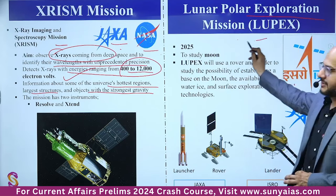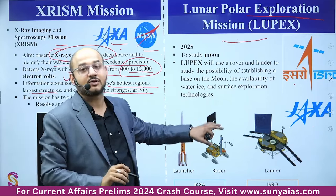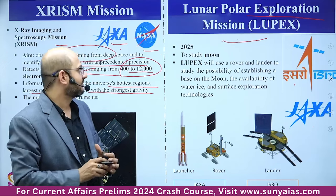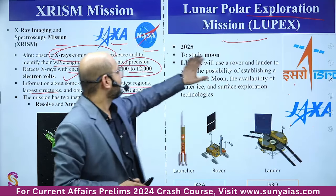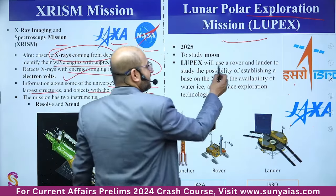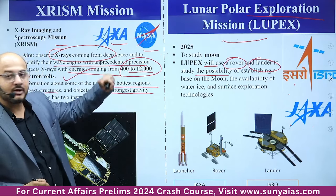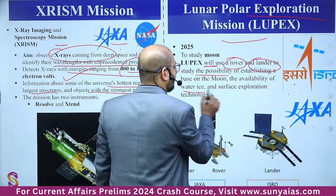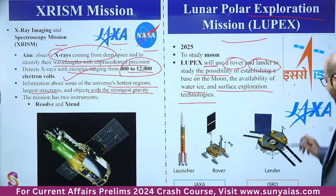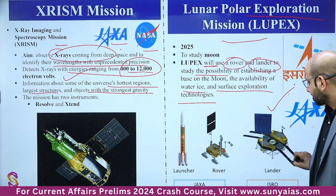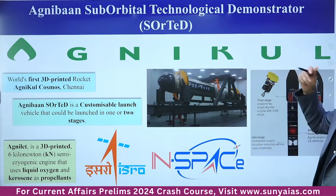LUPEX — Lunar Polar Exploration Mission — is a collaboration between ISRO and JAXA, planned for 2025. It will use a rover and a lander to study the possibility of establishing a base on the Moon, exploring the polar regions for water ice availability and surface exploration technologies. India has demonstrated lander capability; the rover and launcher will be funded and provided by Japan's JAXA.